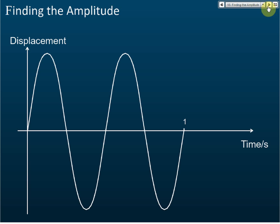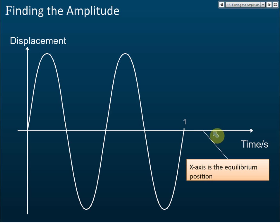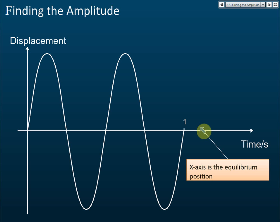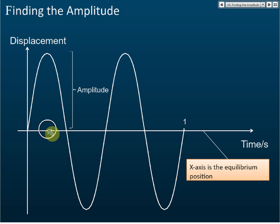Let's see this example finding amplitude from a displacement-time graph. For a displacement-time graph, the x-axis is the equilibrium position — it is the center of the oscillating system. The amplitude is the maximum displacement from the equilibrium position, so this maximum point here represents the amplitude. You can also use the minimum point.